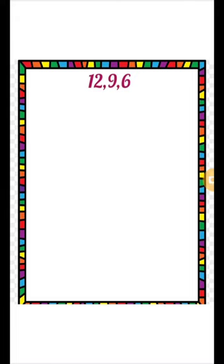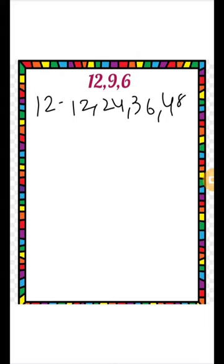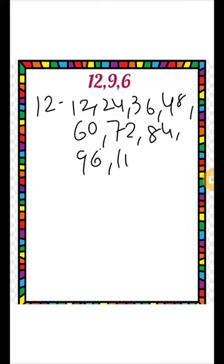The next question: find the LCM of 12, 9, and 6. Here we have three numbers, so we will write the multiples of all three. Let's start with 12: 12, 24, 36, 48, 60, 72, 84, 96, 108, 120.